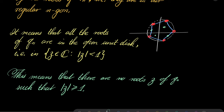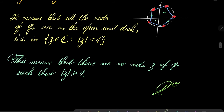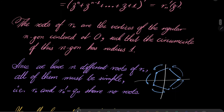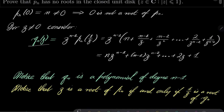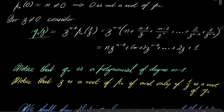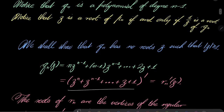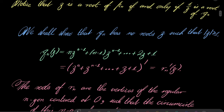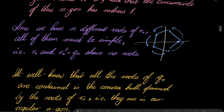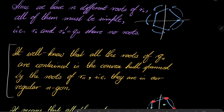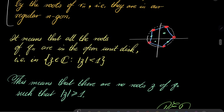This means there are no roots of p_n with |z| ≤ 1, which closes our proof. Let's go over the proof once more: we introduced the new polynomial q_n, noticed it is exactly the derivative of the well-known polynomial r_n whose roots are the vertices of a regular n-gon centered at zero with circumradius one, and used the powerful fact from complex analysis that all roots of the derivative are contained in the convex hull spanned by the roots of r_n. And that is it — thank you very much for watching, I hope you've learned something new, and I'll see you next time. Goodbye.